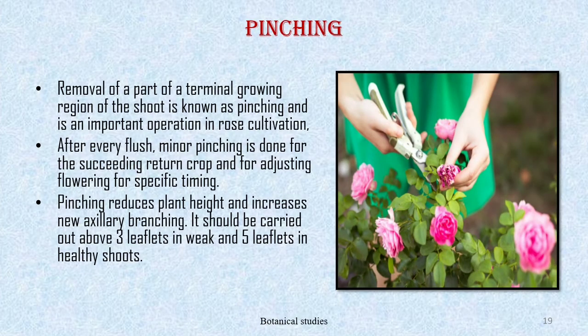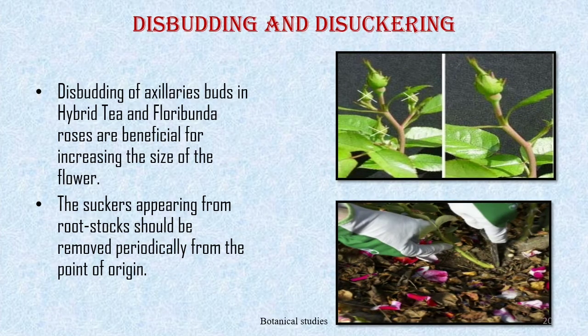Pinching: removal of a part of the terminal growing region of a shoot is known as pinching, and it is an important operation in rose cultivation. After every flush, minor pinching is done for the succeeding return crop and for adjusting flowering timing. Pinching reduces plant height and increases new axillary branching; it should be carried out above 3 leaflets in weak shoots and 5 leaflets in healthy shoots. Disbudding and desuckering: disbudding of axillary buds in hybrid tea and floribunda roses is beneficial for increasing the size of the flower. Suckers appearing from the rootstock should be removed periodically from the point of origin.